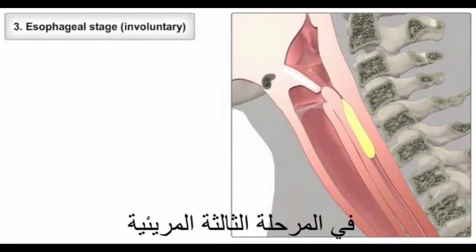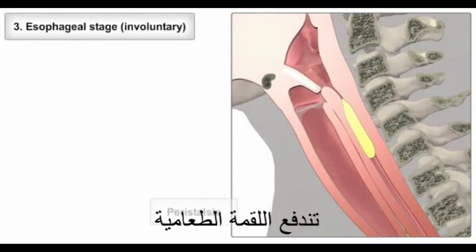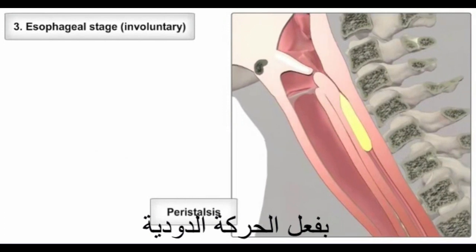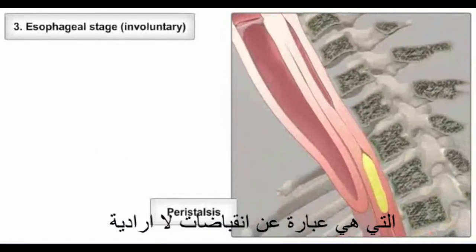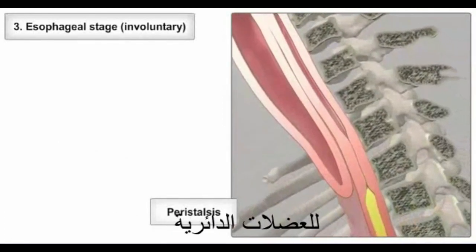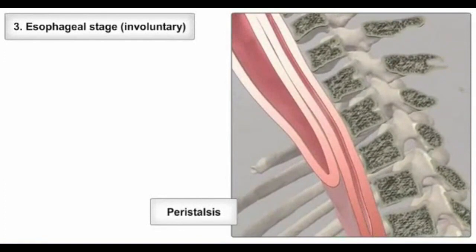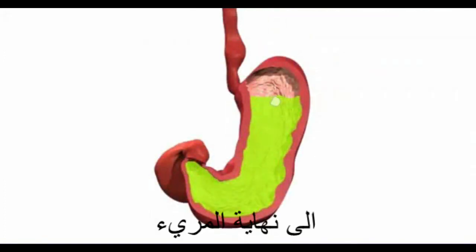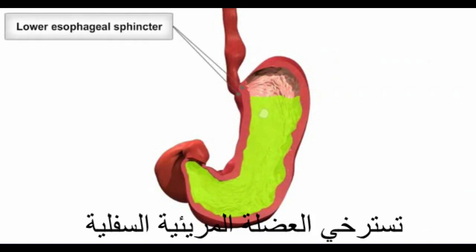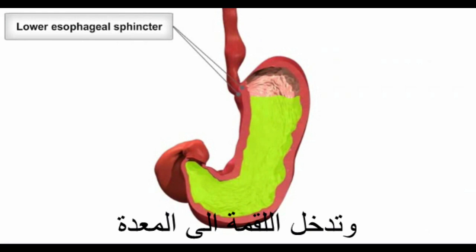In the final esophageal stage, the bolus is pushed onward by peristalsis — a progression of involuntary wave-like contractions of the circular and longitudinal smooth muscles of the esophagus. As the bolus approaches the end of the esophagus, the lower esophageal sphincter relaxes and the bolus moves into the stomach.